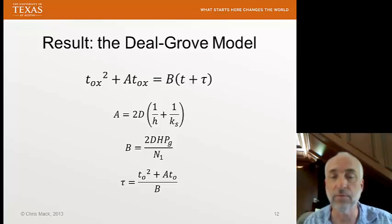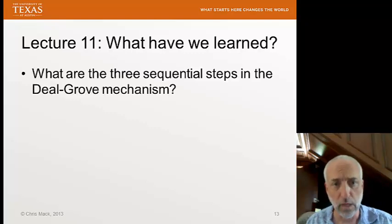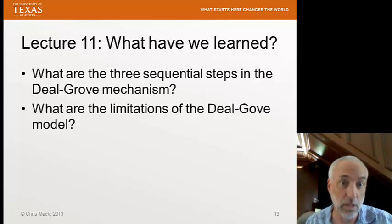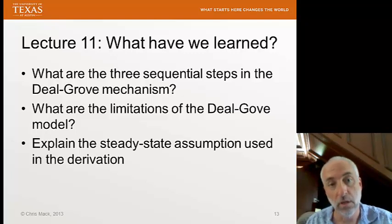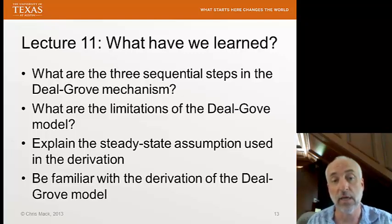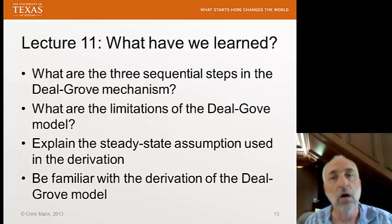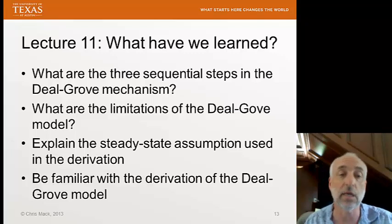We've just finished our derivation. What we've learned: you should be able to know and explain the three sequential steps in the Deal-Grove mechanism, describe the limitations of the model, explain the steady-state assumption used in the derivation, and be familiar with the derivation in general. That's Lecture 11. In Lecture 12, we'll continue our discussion of the Deal-Grove model and how to use this equation.